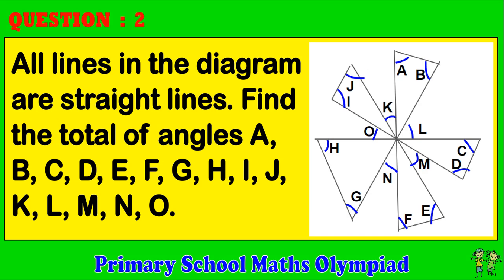Question 2. All lines in the diagram are straight lines. Find the total of angles A, B, C, D, E, F, G, H, I, J, K, L, M, N, O.